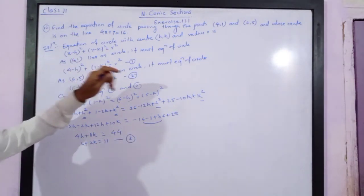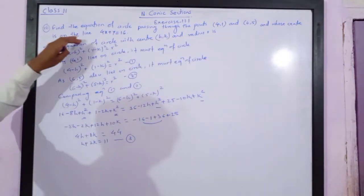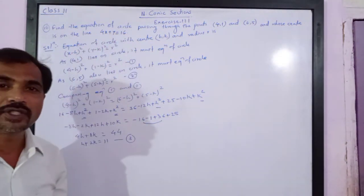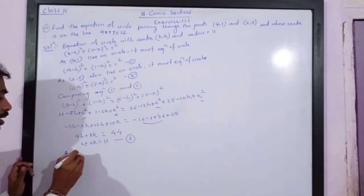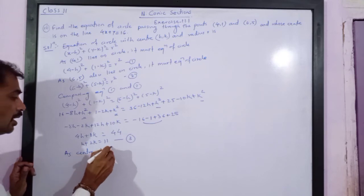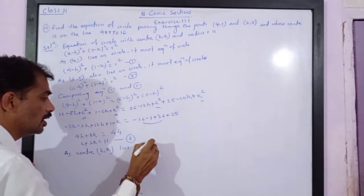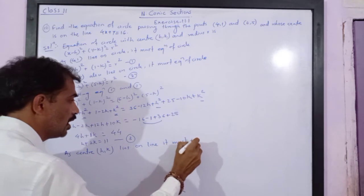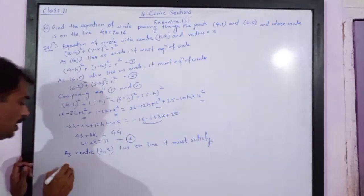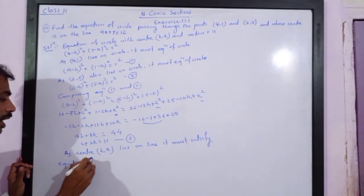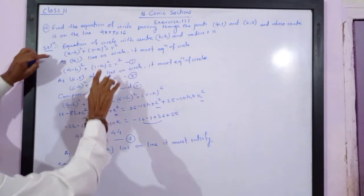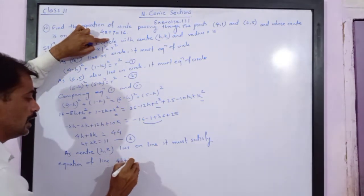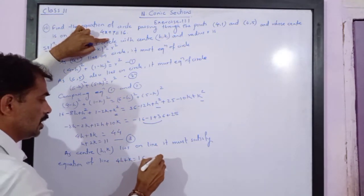We are also given that the center lies on the line 4x + y = 16. Since center (h, k) lies on this line, it must satisfy the equation of the line. So: 4h + k = 16. This is equation number 4.